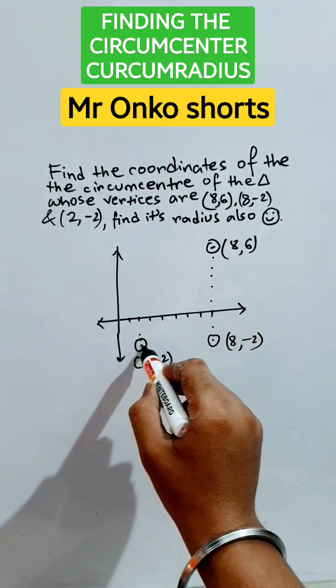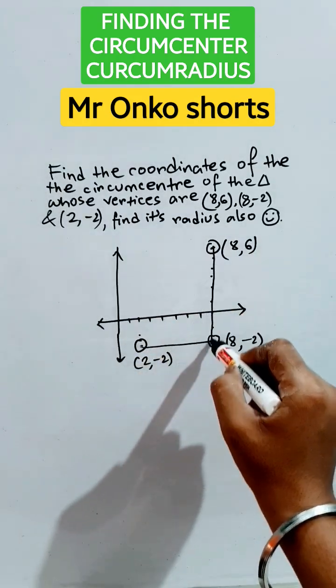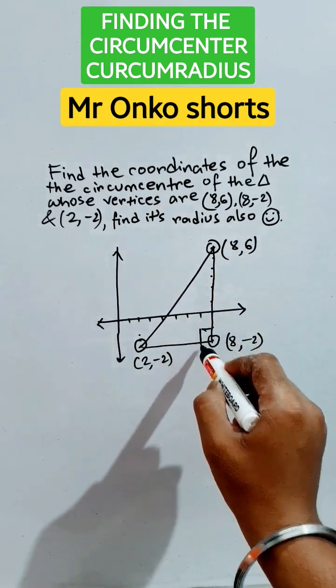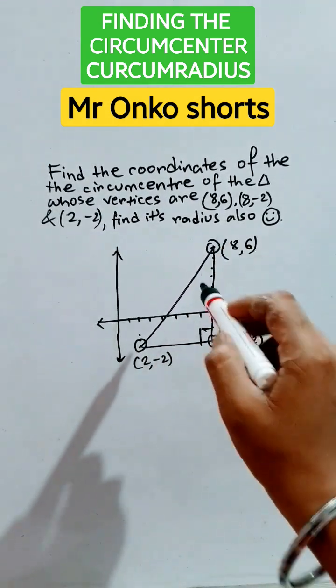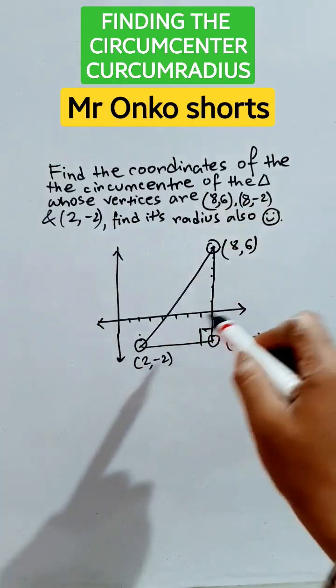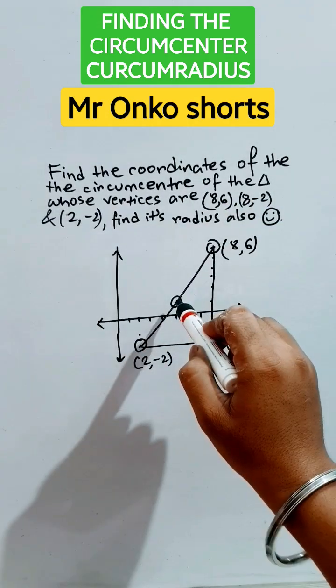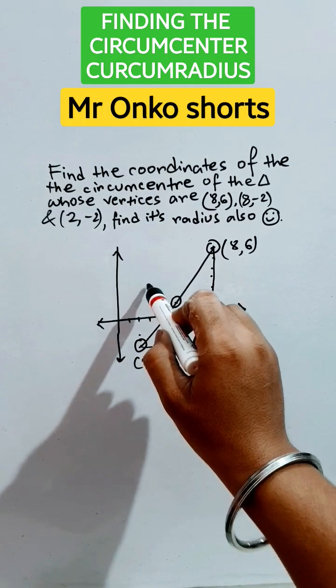Now if we join the three sides, we will get a right angle triangle. So we know that in this right angle triangle, the circumcenter is nothing but the midpoint of the hypotenuse. So this is the point, this is the circumcenter.